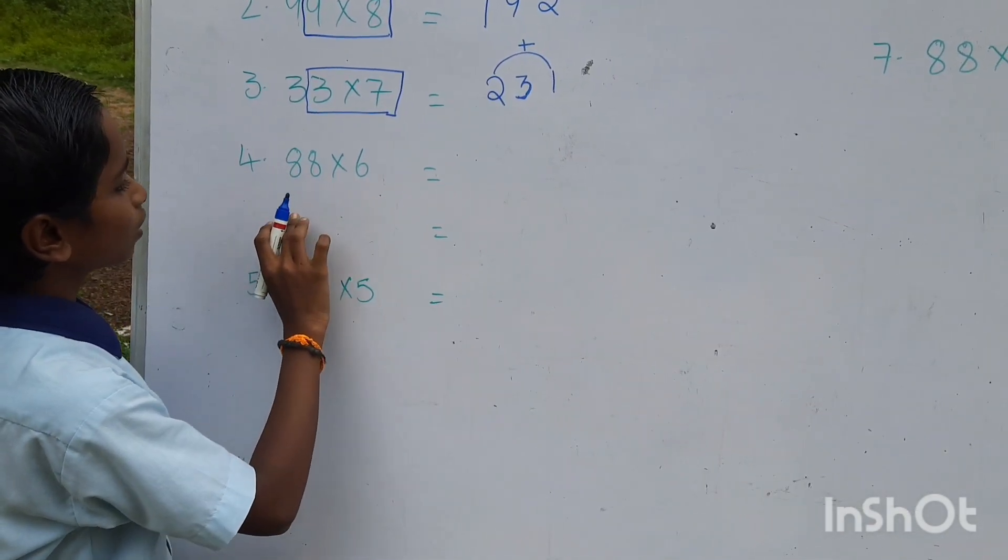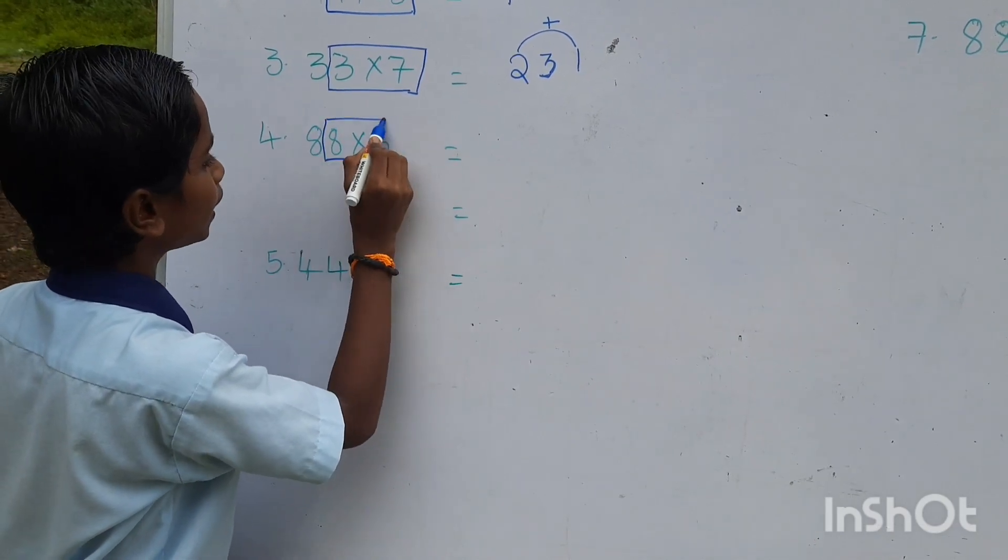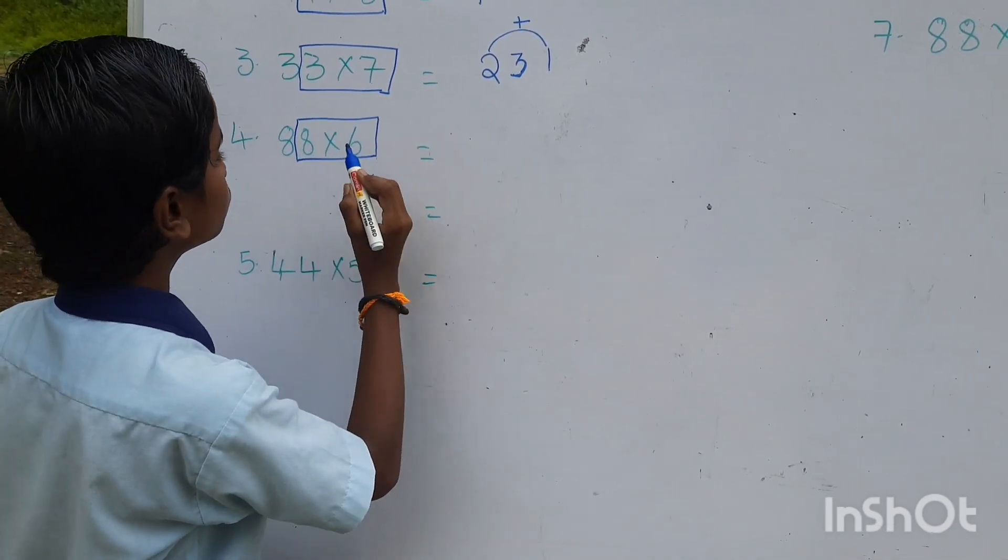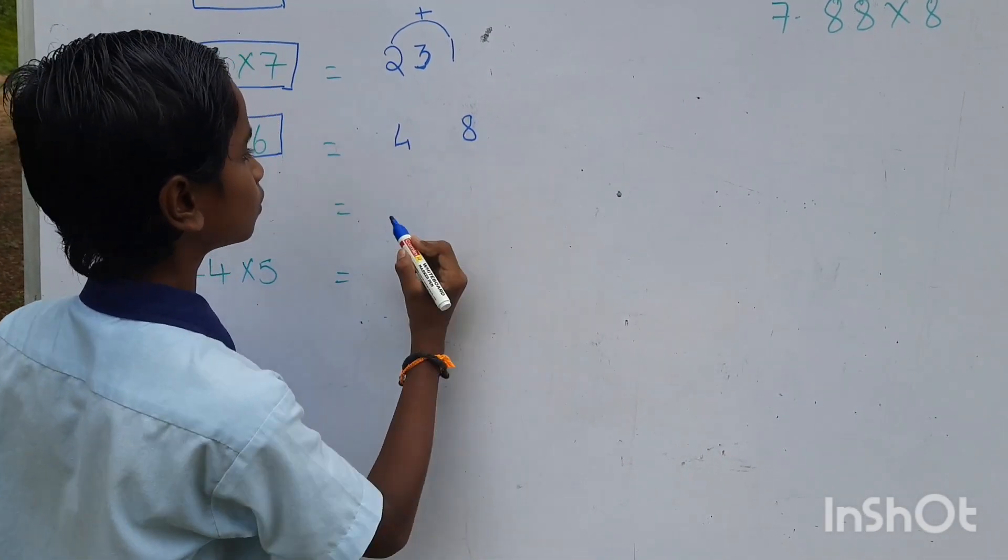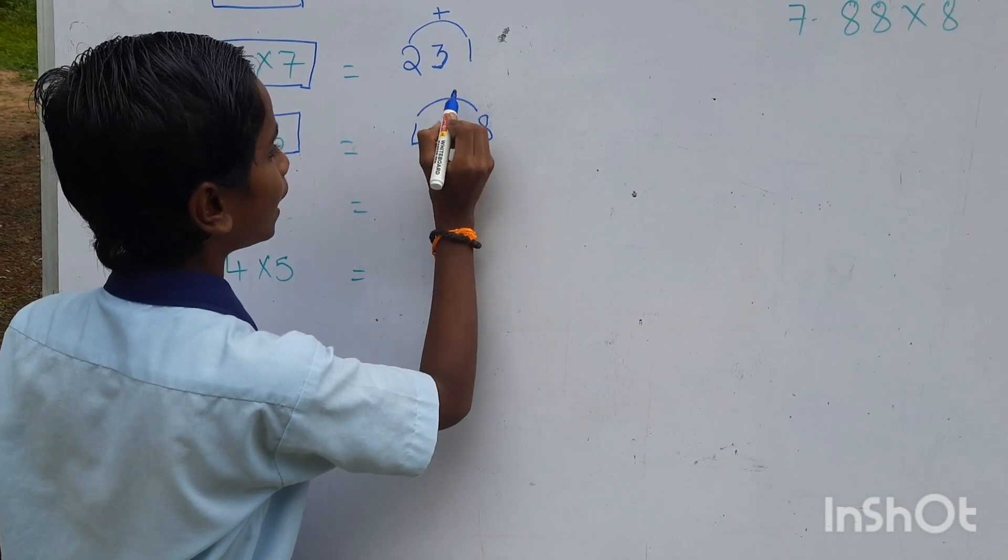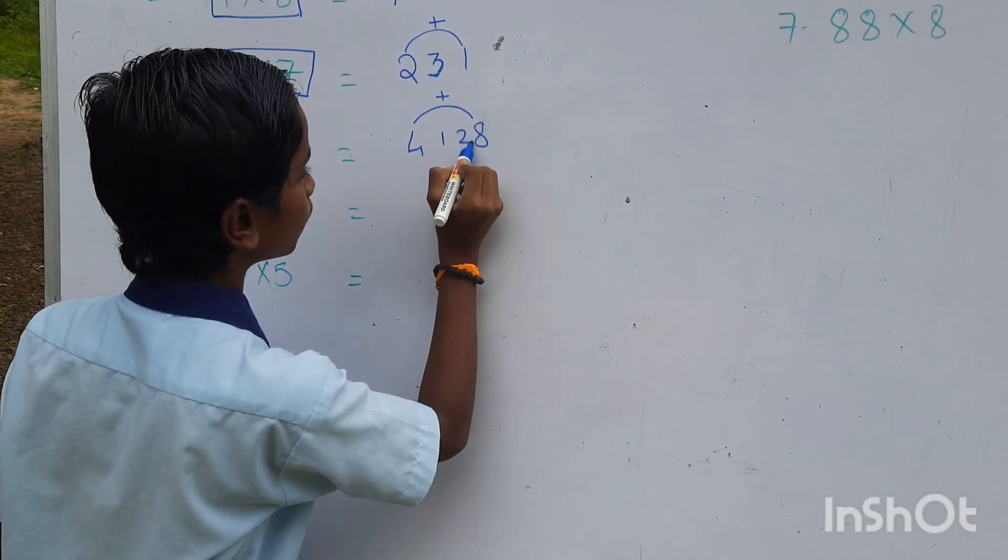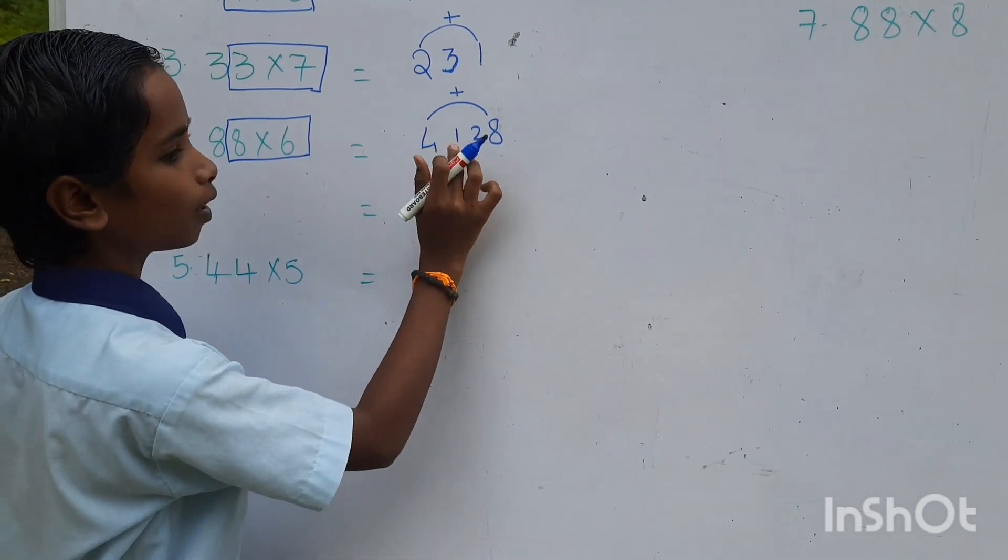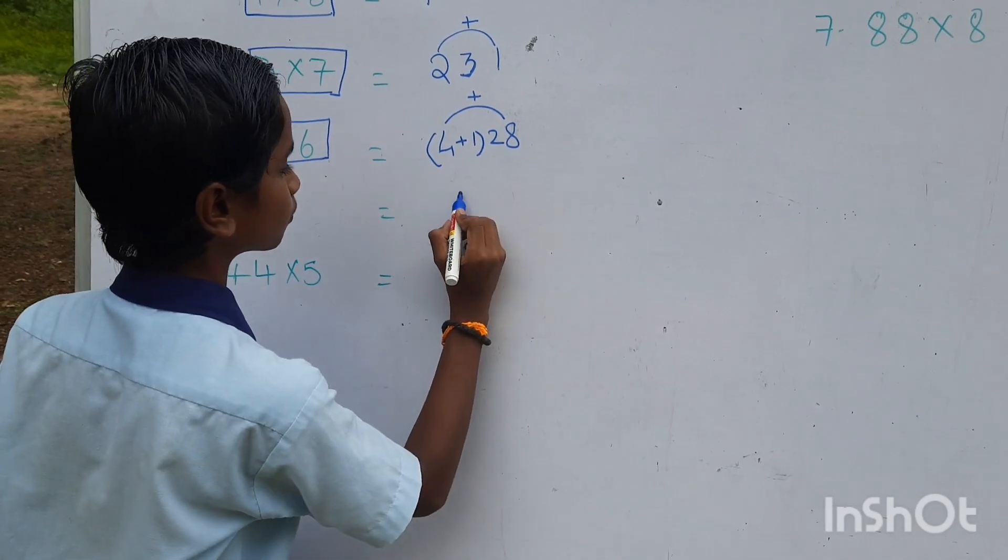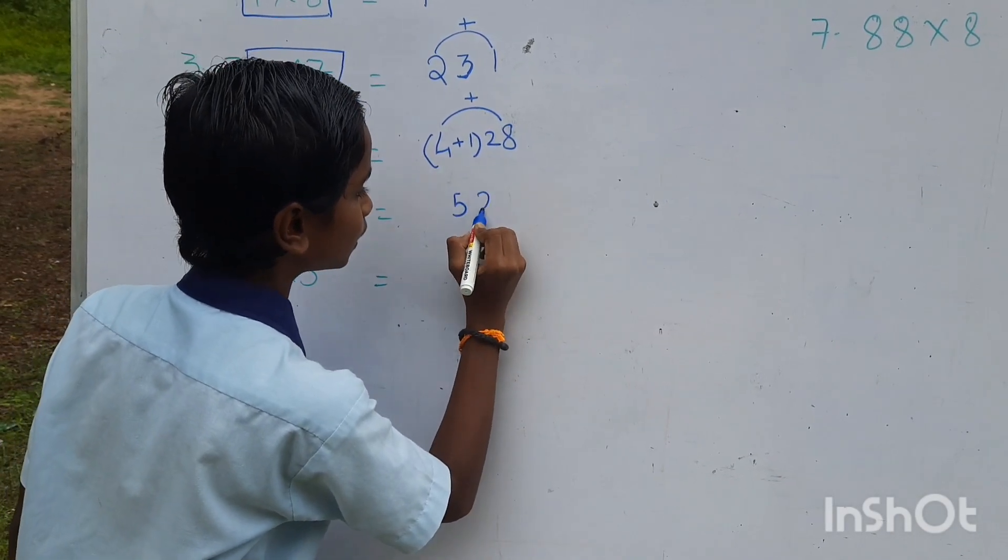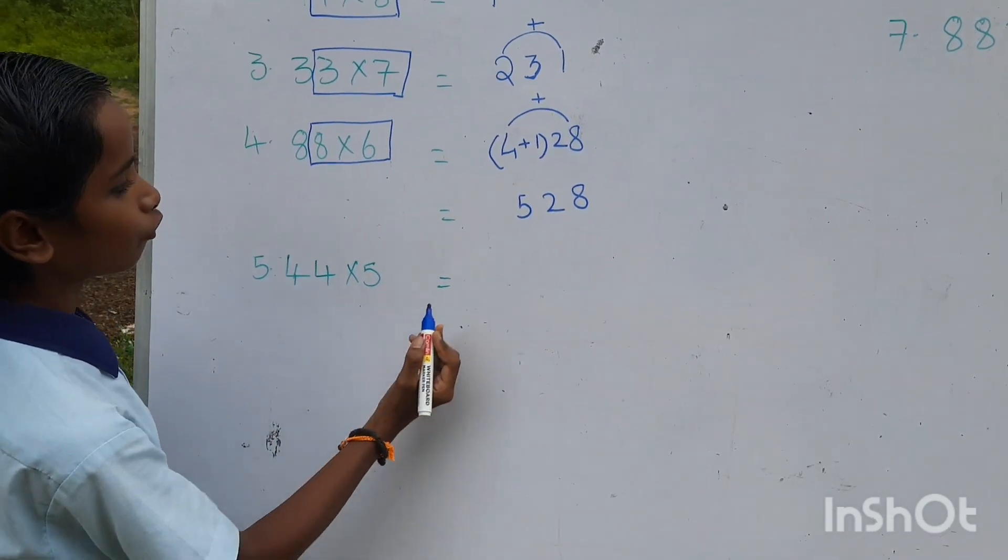Fourth one, 88 into 6. We want to multiply 8 into 6. 8 6s are 48. We want to add these both numbers. 4 plus 8 equals to 12. Again, we want to add these both numbers, 4 and 1. The answer is 528. 88 6s are 528.